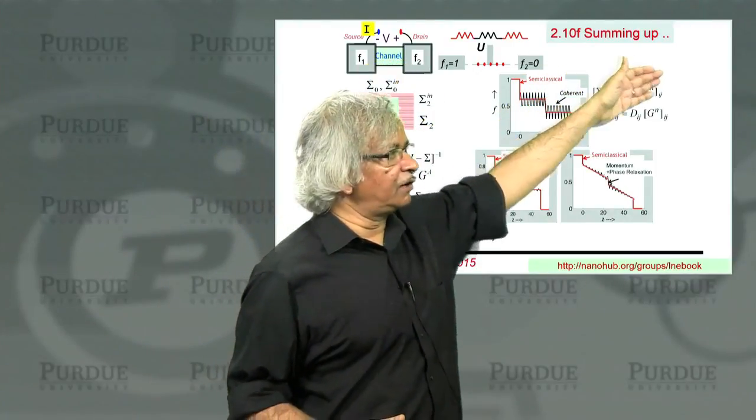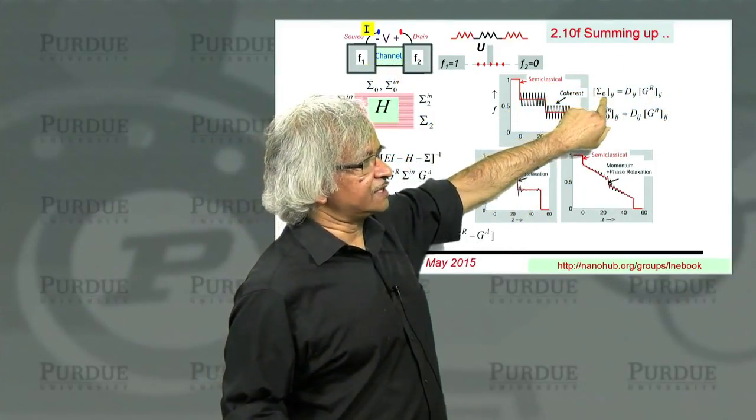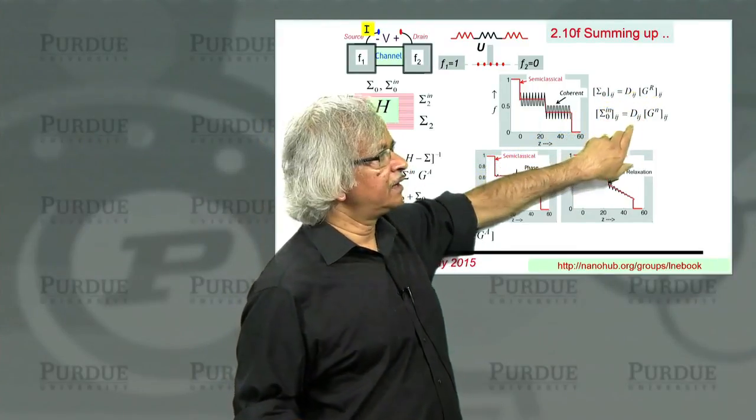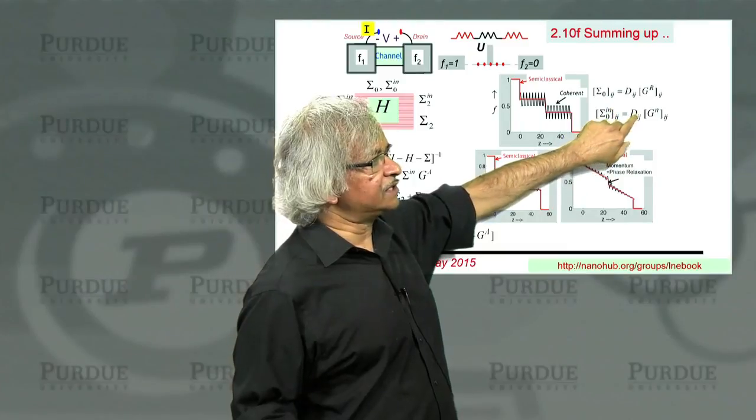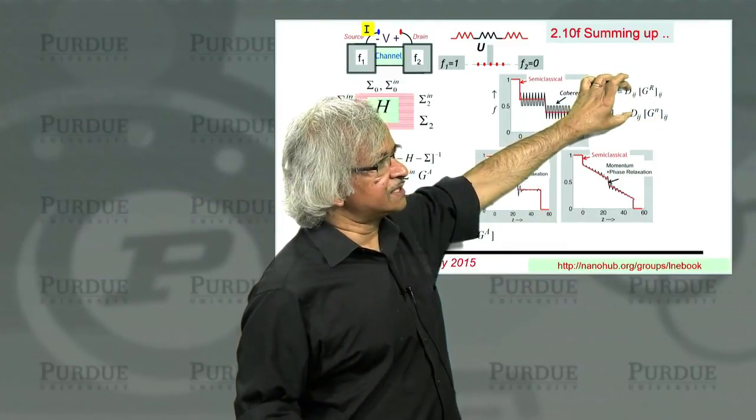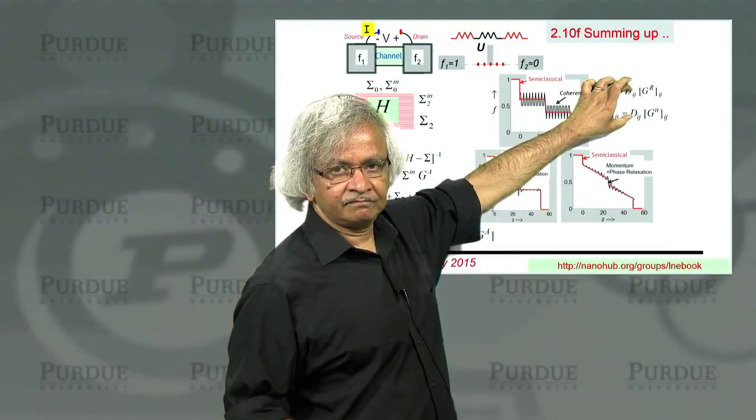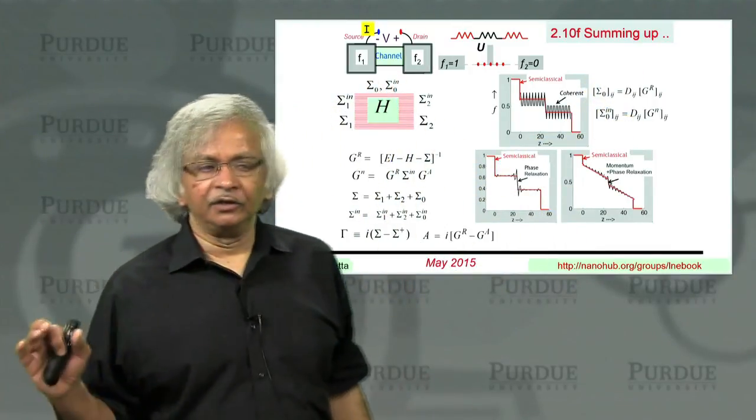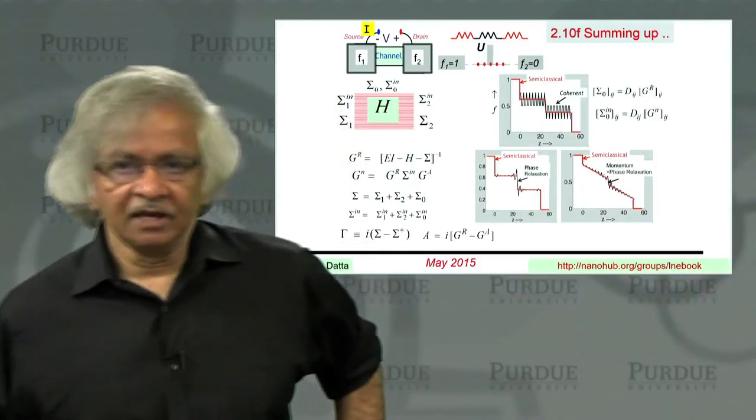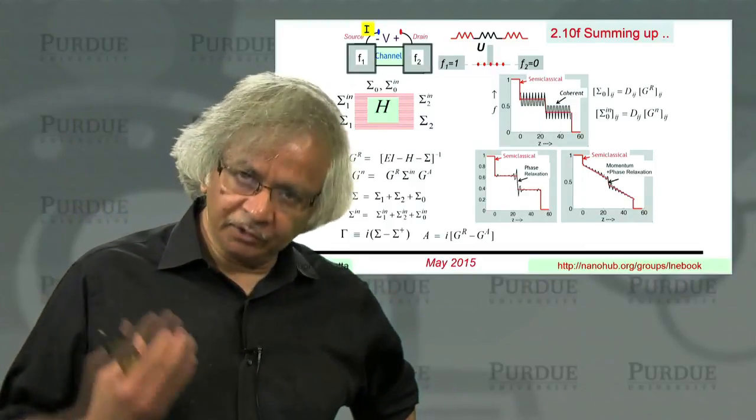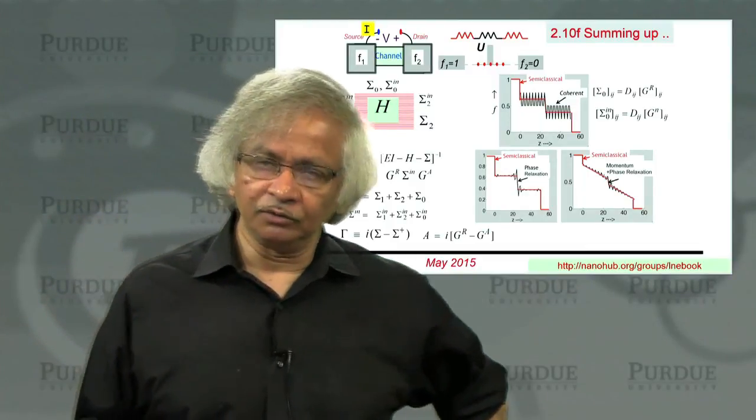How do you include the dephasing processes? I say one way of doing it is with this choice. That is sigma zero ij is equal to dij times gr, and sigma zero n is dij times gn. And as long as this D is a symmetric matrix, electrons will be conserved so you won't run into any fundamental problems.